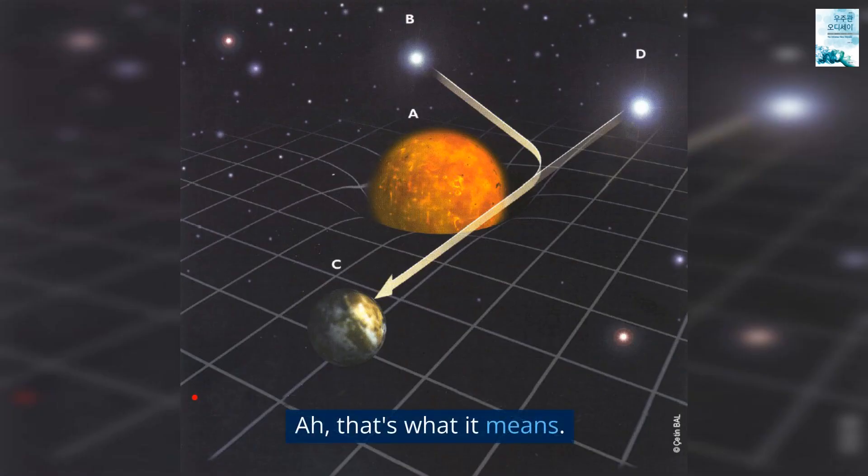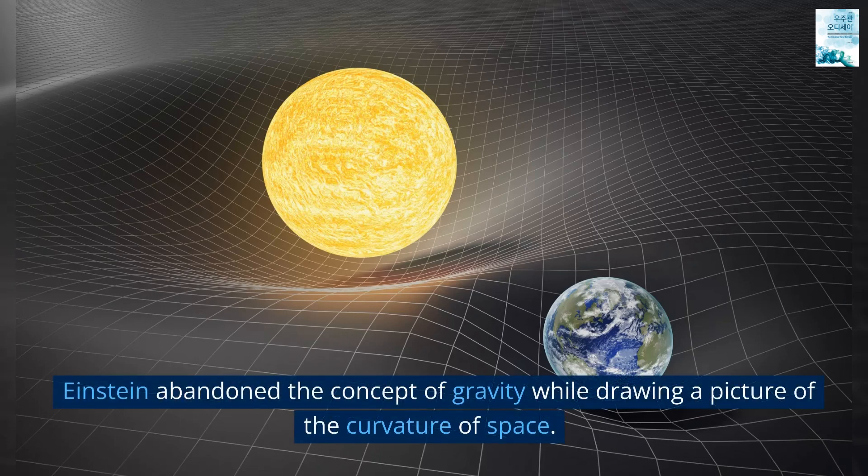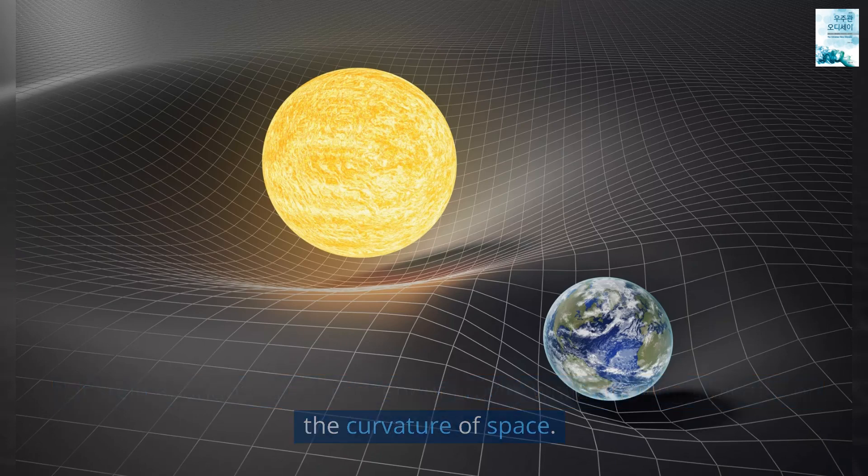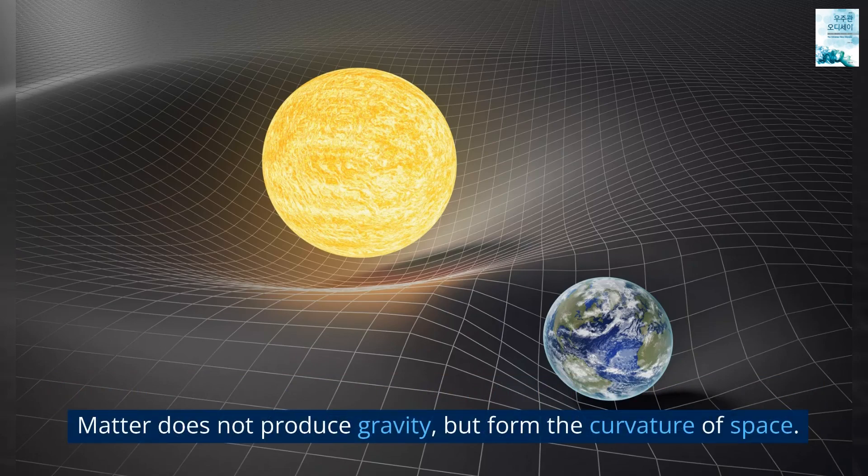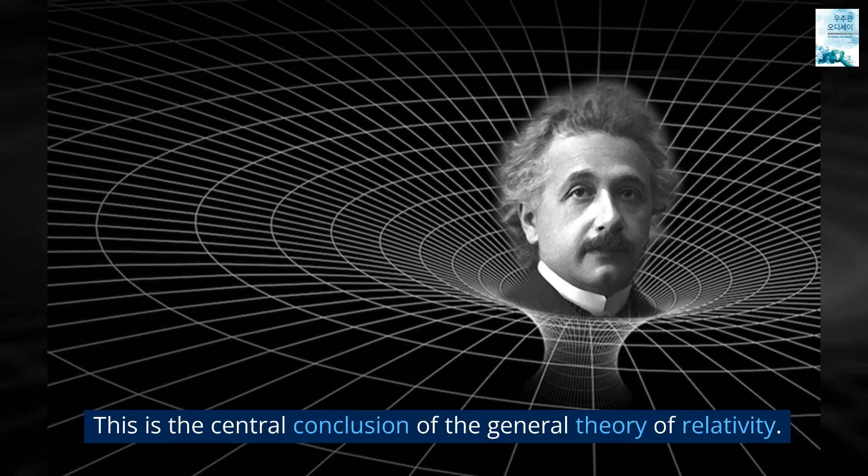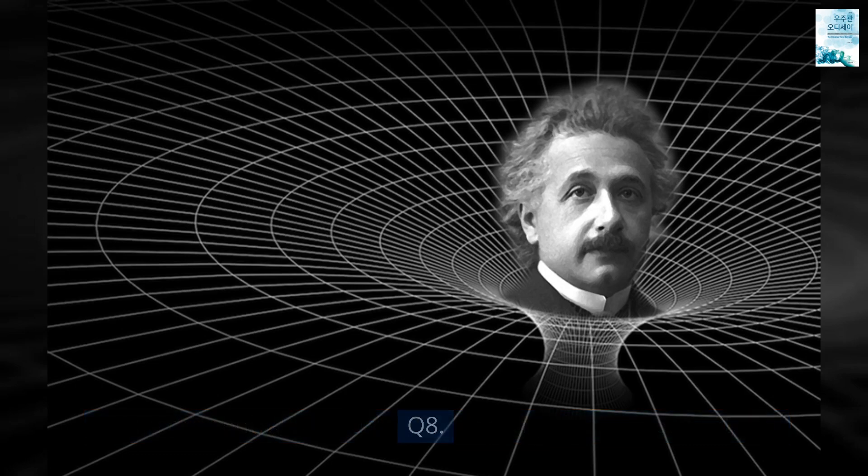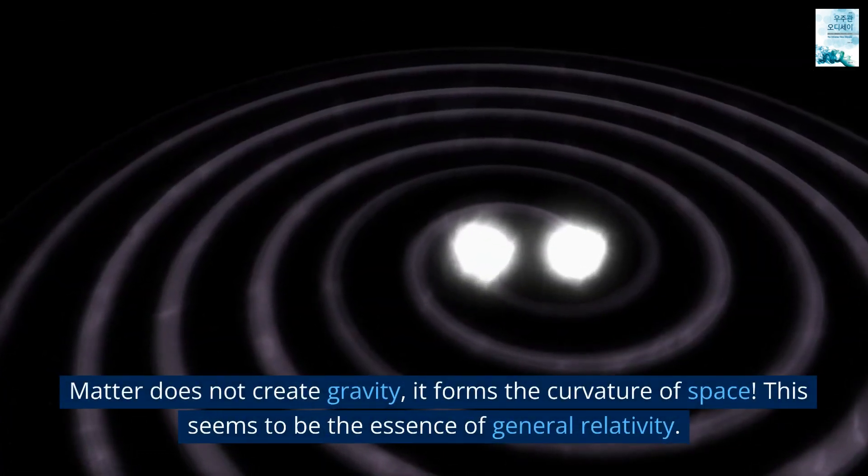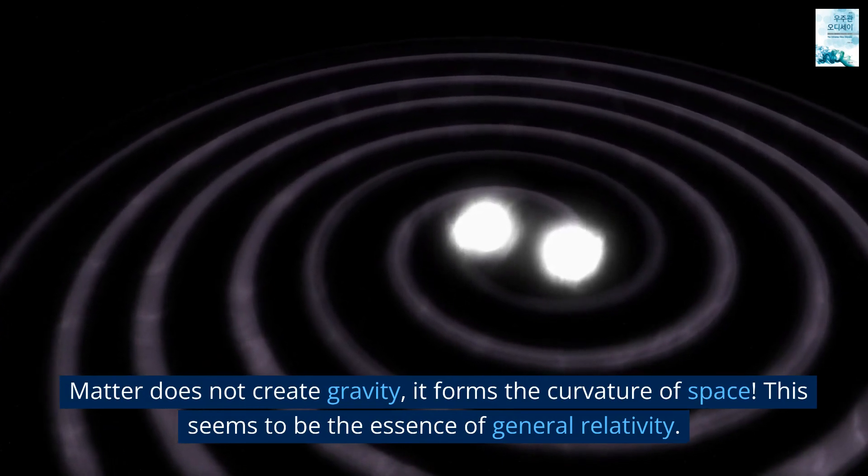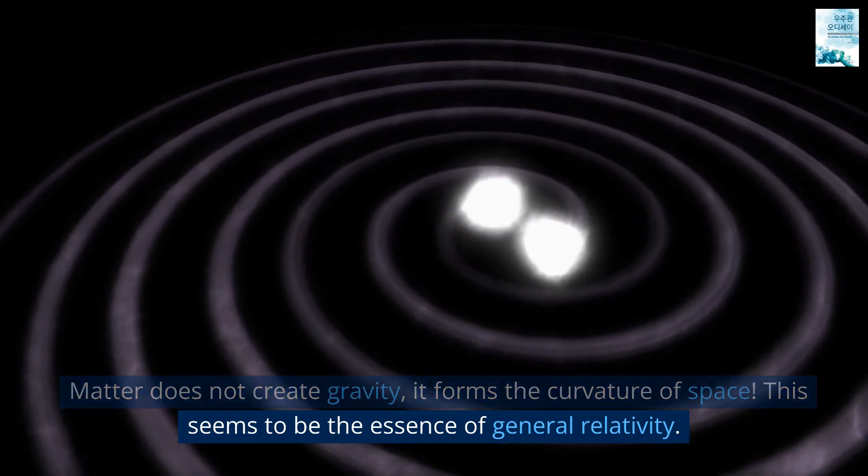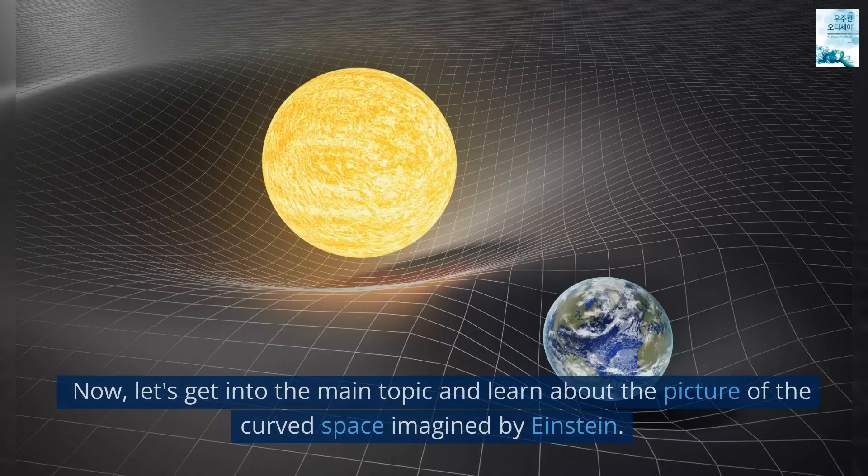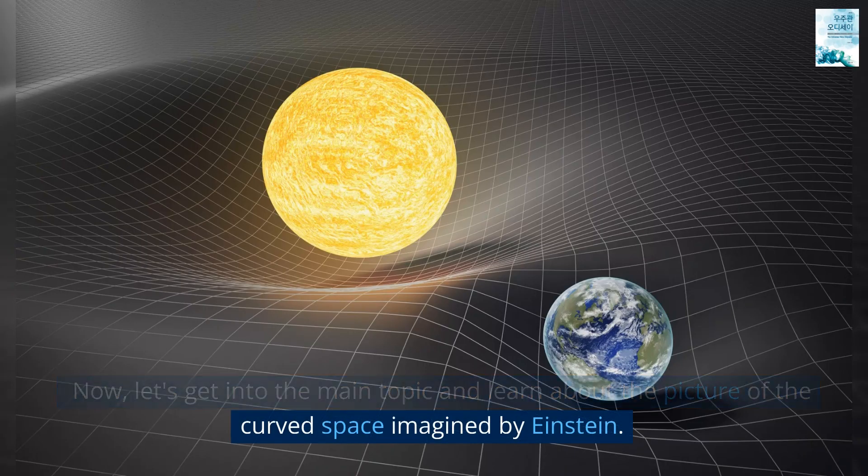Ah, that's what it means. Einstein abandoned the concept of gravity while drawing a picture of the curvature of space. Matter does not produce gravity, but form the curvature of space. This is the central conclusion of the general theory of relativity. Matter does not create gravity, it forms the curvature of space. This seems to be the essence of general relativity. Now let's get into the main topic and learn about the picture of the curved space imagined by Einstein.